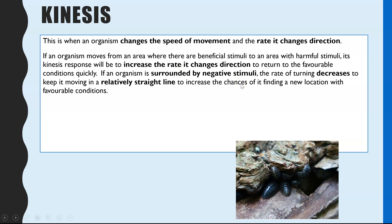Alternatively, if an organism is completely surrounded by negative stimuli — not just having crossed the boundary but fully in unfavorable conditions — the rate of turning actually decreases. This makes it move in a more straight line so that it keeps moving until it can hopefully find a new location with favorable conditions. So the kinesis response depends on whether the organism has just crossed that boundary or is completely surrounded.